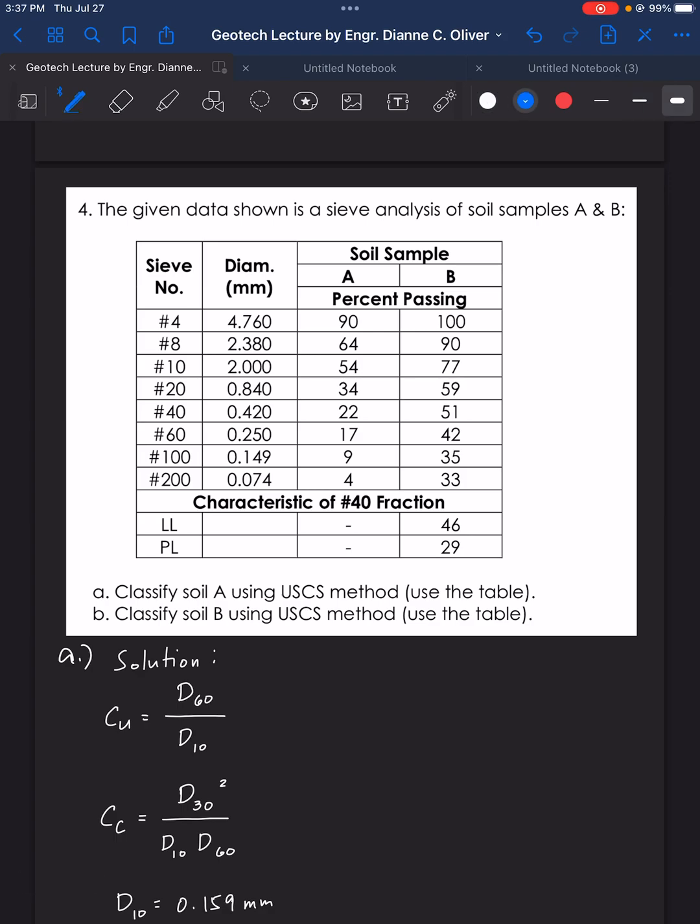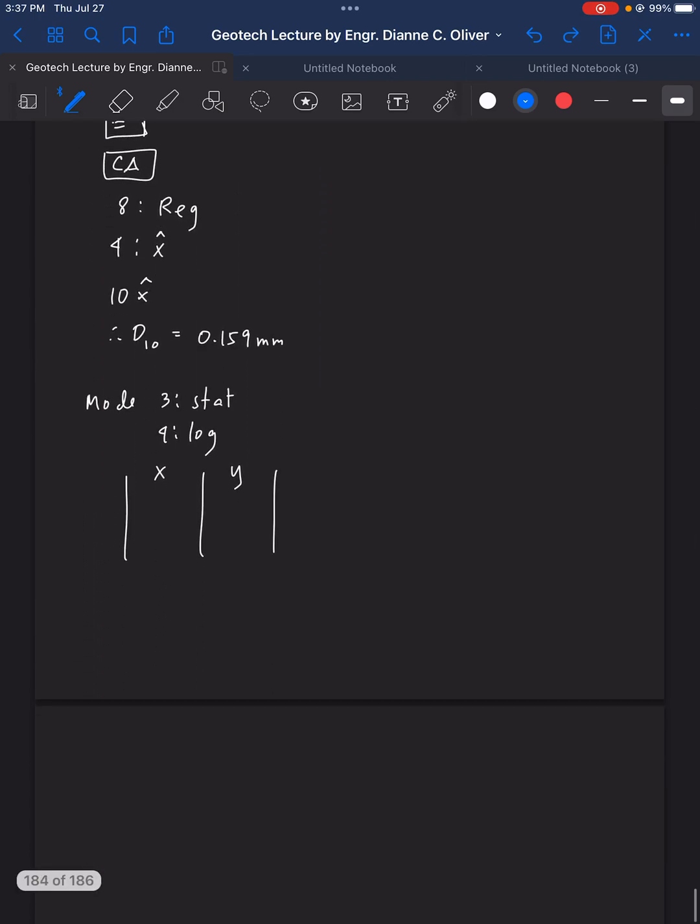The 30 percent passing is between 34 and 22. It's in here, 30 percent passing. We're looking for the diameter here. So that becomes the D30. We will focus here for our calculator. We will input there, 0.840 and then 0.420. And then, we have here, 34 and 22. We have here, 0.84 equals, 0.42 equals, and then we have here, 34 equals, 22 equals. And then, C, A.